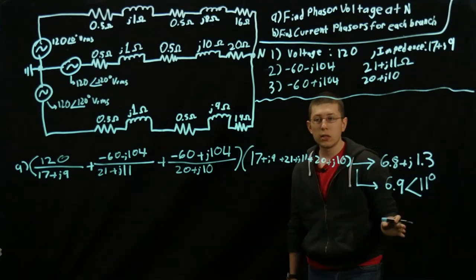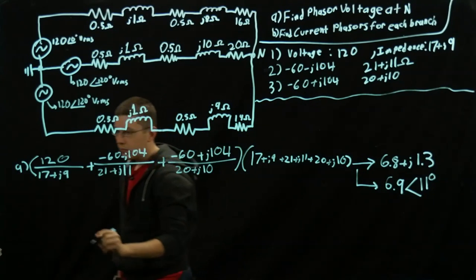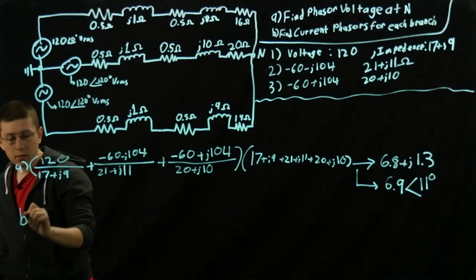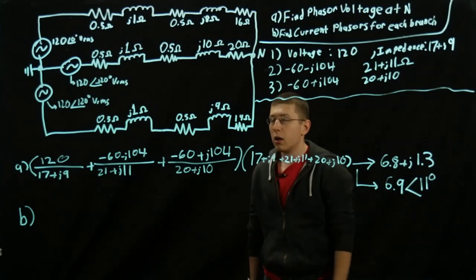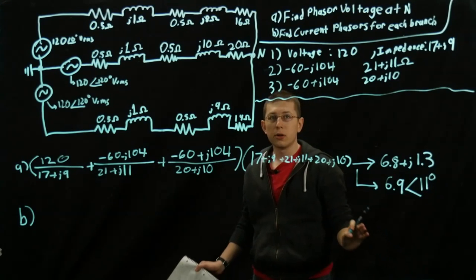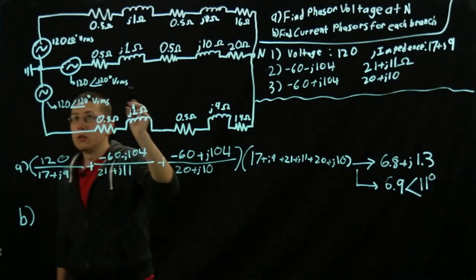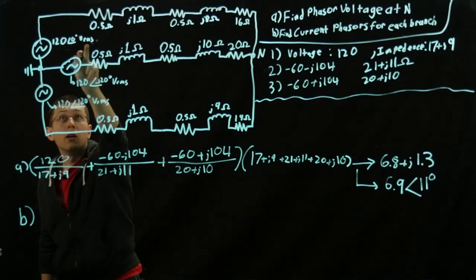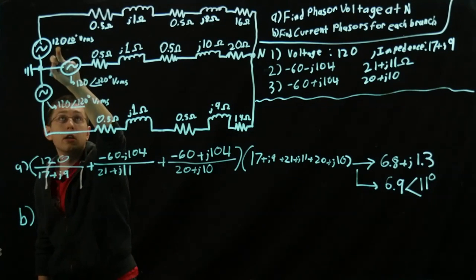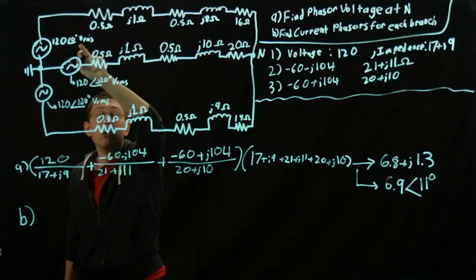And so now, actually, the lion's share of our work is already done for us with regards to Part B. With regards to Part B, this is no different from any other nodal analysis you might do using Kirchhoff's current law. So for the top loop, the top branch, it'll be this voltage minus that voltage over the impedance.